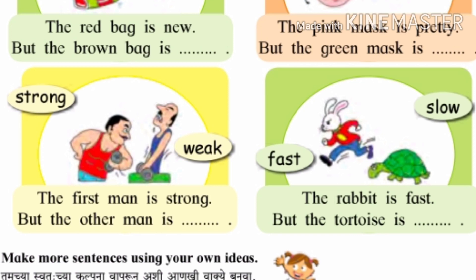Now come to the next picture. A rabbit and a tortoise are given and two words are given: fast and slow. Fast manje jalat gatine, slow manje mandagatine. The rabbit is fast but the tortoise is slow. Sasa ha jalat ahe, tar kasav he haluaar ahe. Sasa ha jalat gatice ahe, tar kasav he mandagatice ahe. Slow and fast, both words are opposite to each other.